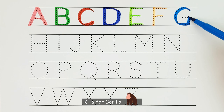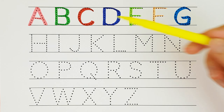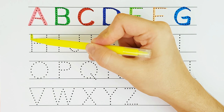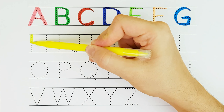E. E is for elephant. E. F. F is for fox. F.